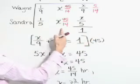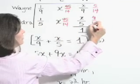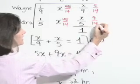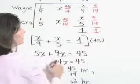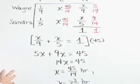The amount of work done by Sandra is one fifth times 45 fourteenths, or nine fourteenths. She's done more of it. She's a little faster. Together, those total one complete job. That checks out. We can feel comfortable, then, that our answer is three and three fourteenths hours.